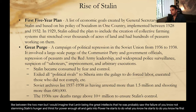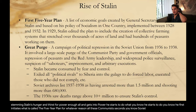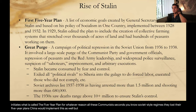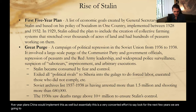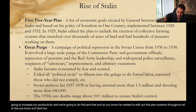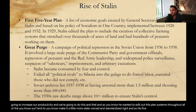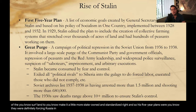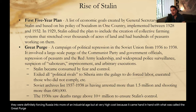Once Stalin gets into power, he first initiates what is called the five-year plan. For whatever reason, all these communistic and Soviet-style regimes love their five-year plans — China would implement this as well. Essentially, this is a very concerted effort to say: for the next few years, we are going to increase our productivity. He wanted to rework the farming systems throughout all the serf land to make it more state-owned and standardized. His five-year plans were definitely forcing Russia into more of an industrial age, but at a very high cost because it came hand-in-hand with what was called the Great Purge.